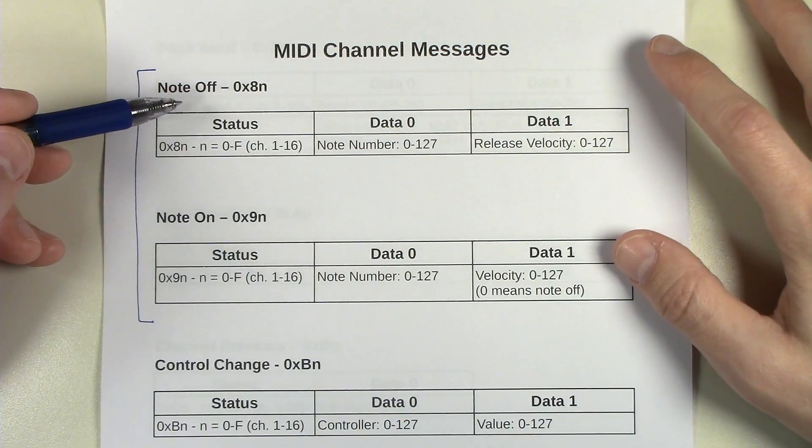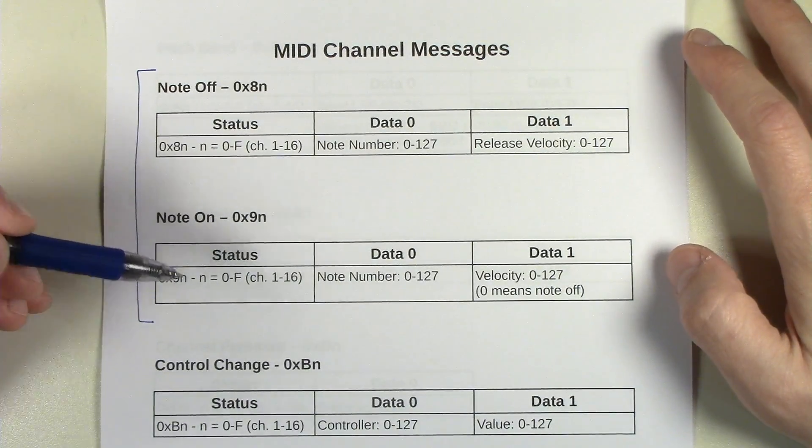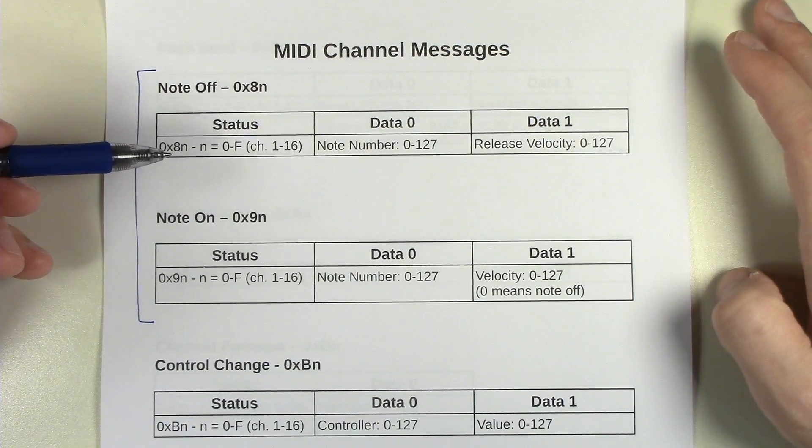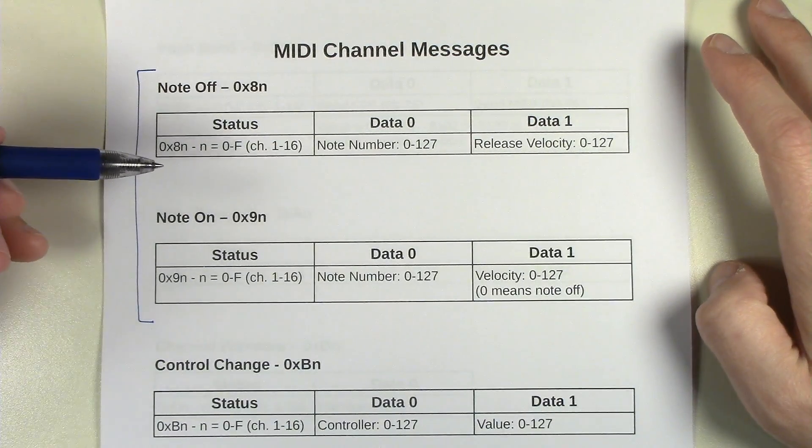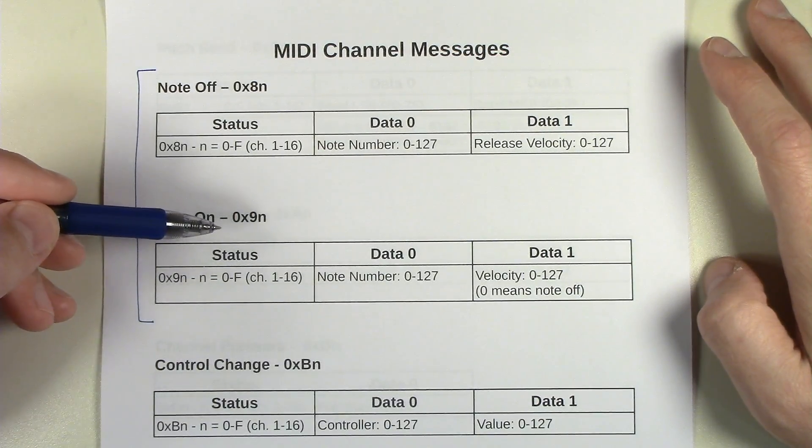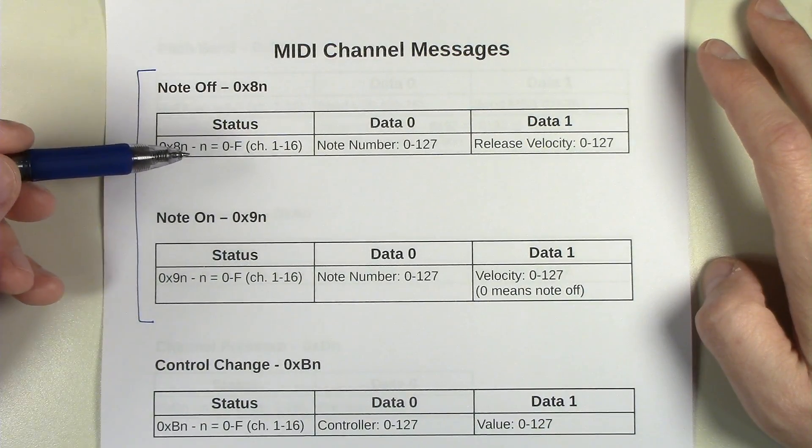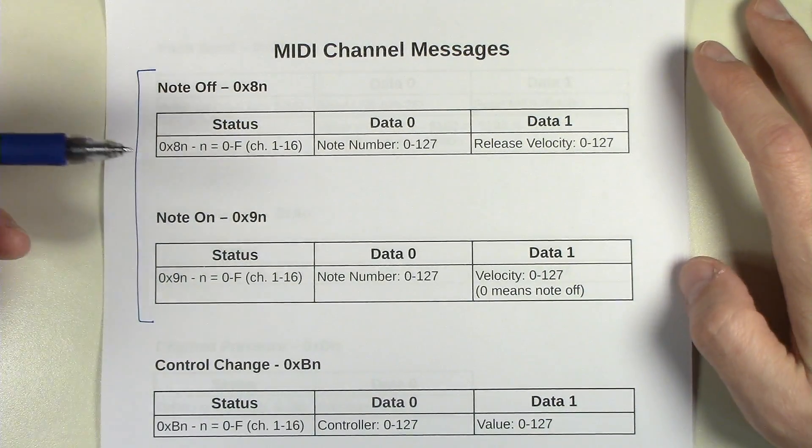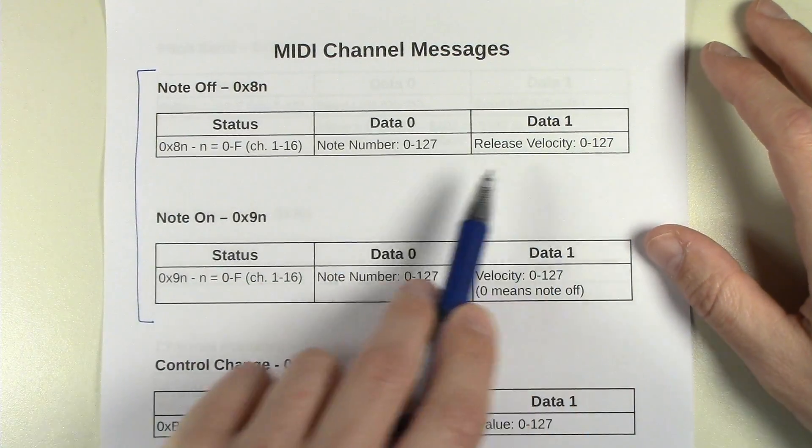There's Note Off and then there's Note On, and they sort of work in the same way. There's a sort of special thing about how they work, especially with the Note On, and we'll get into that in a sec. But basically they both work the same way, where they both have 3 bytes.